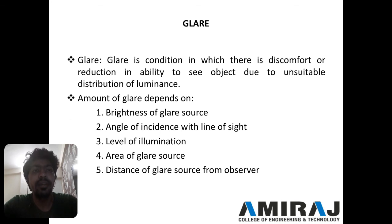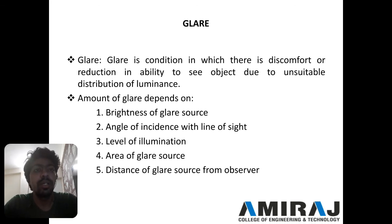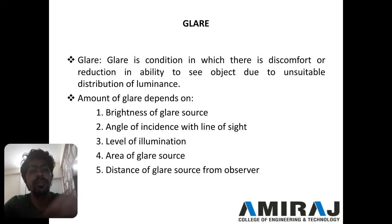Glare is a condition in which discomfort or reduction in ability to see occurs, causing unsuitable distribution of luminance. The amount of glare depends on five factors: brightness of the glare source, angle of incidence with line of sight, level of illumination, area of the glare source, and distance of the glare source.